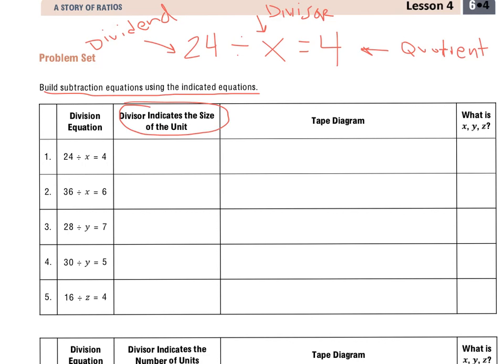I'll do two from this table and two of the same questions down below to show you the difference. But we see that in this table up above, the divisor indicates the size of the unit, meaning not the number of groups, but how many are in each group. And I'm going to show you a quick one just to show,